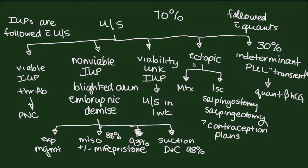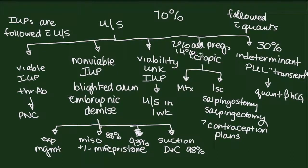That's why if you wait and get a quantitative beta-HCG, you could actually save the patient some money and not draw a lab test that ultimately has no diagnostic value in caring for your patient. Finally, while only 2% of all pregnancies are ectopic, about 14% of patients who present to the emergency room with signs or symptoms of abnormal first trimester pregnancy will have an ectopic pregnancy.